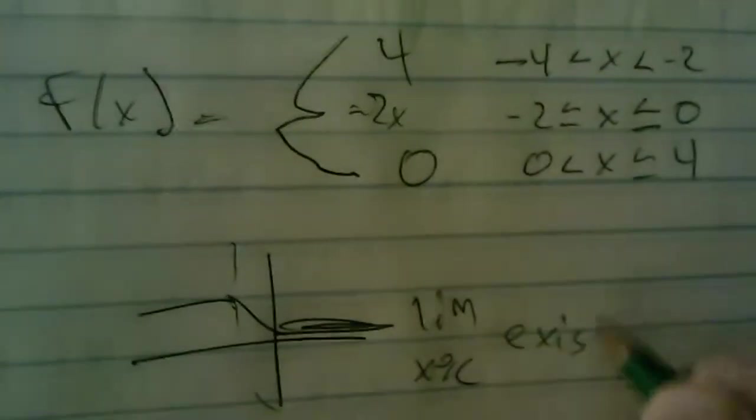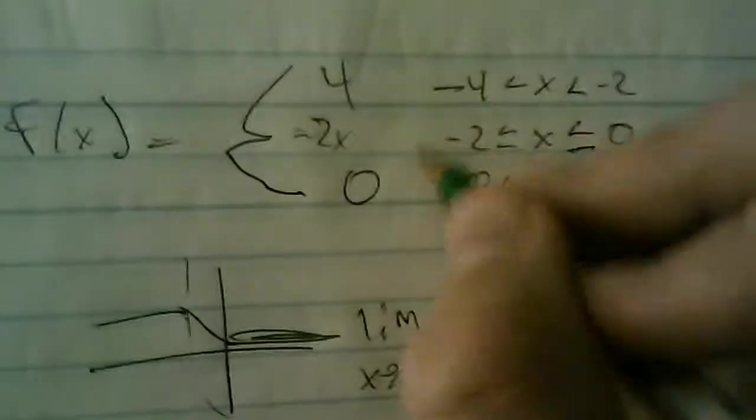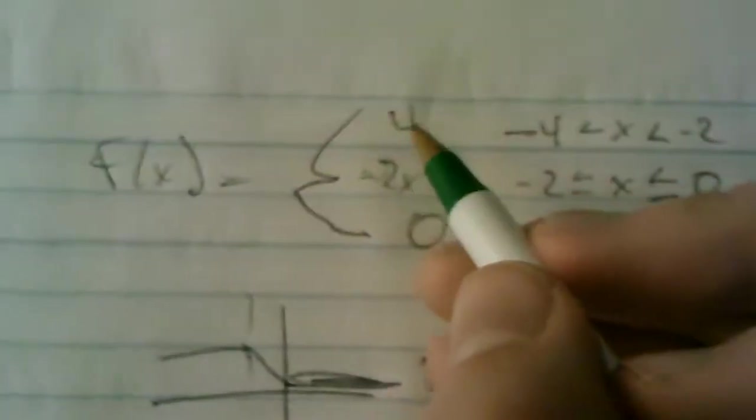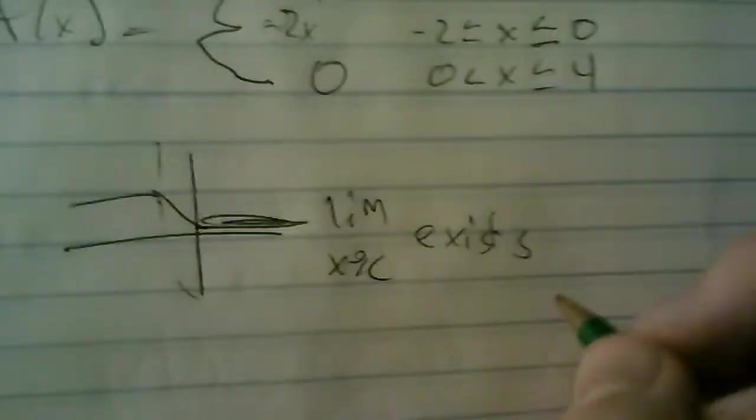So the way to test for this, remember we had limit as x approaches c exists. In this case, c is going to be this value right here. So what is the limit as x approaches negative two exist? Well, at four, the function exists. At negative four, okay, that exists.